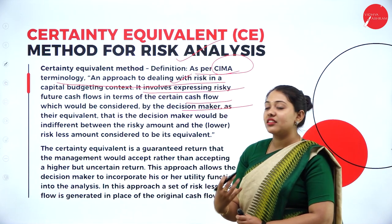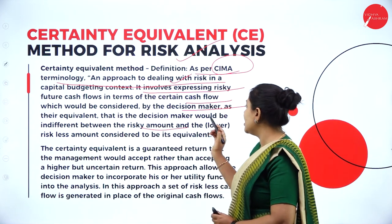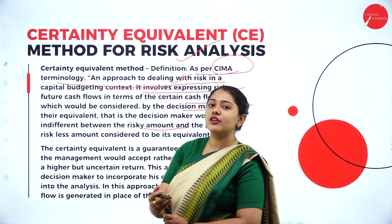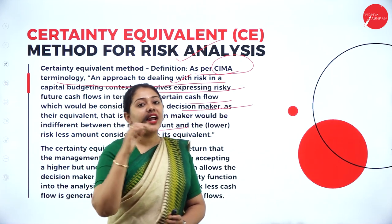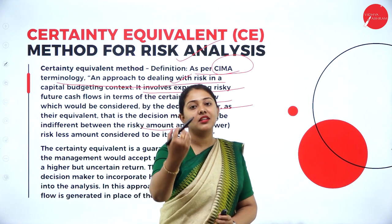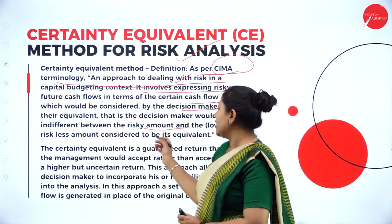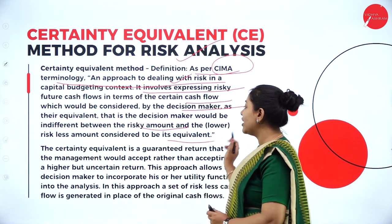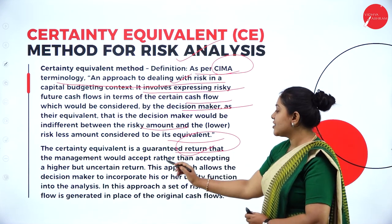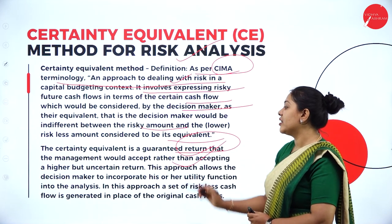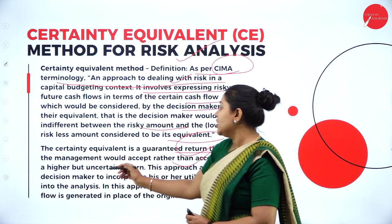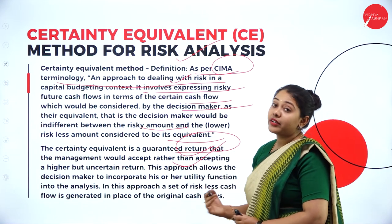How do they consider it? Whatever the risk they are taking up, rather than taking up the riskier amount, they go for the lesser risky amount — it is equivalent to taking up the risk. As I told you, tossing a coin you could get 30,000 rupees if heads, but 0 rupees if tails. Rather than taking up that risk, you are getting 3,000 rupees. So they feel taking up the less risk is equivalent to taking up the higher risk. The certainty equivalent approach is a guaranteed return that management would accept rather than accepting a higher but uncertain return.